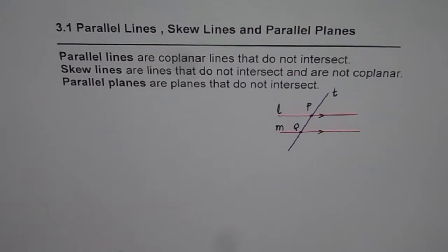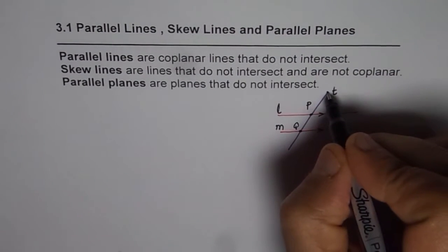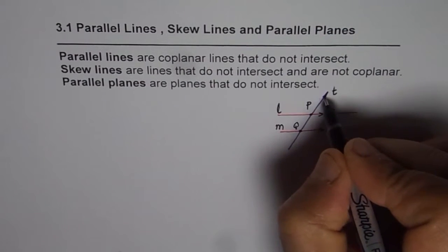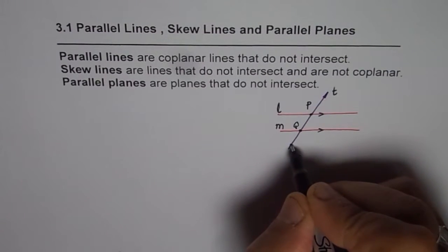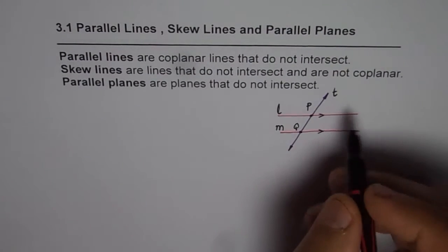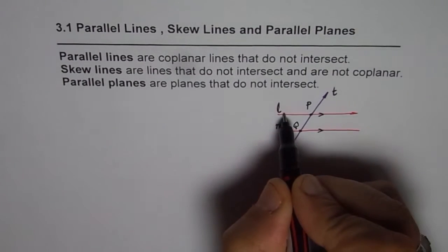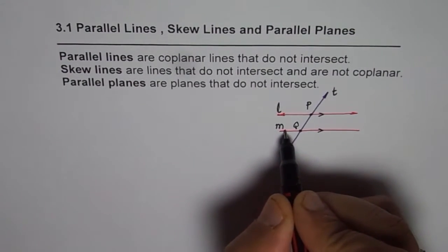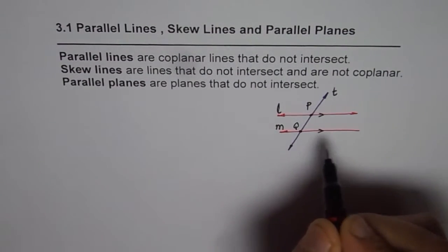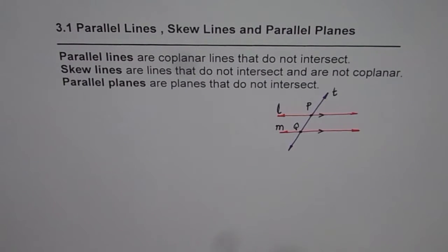Whenever drawing a line, the line extends both sides, so it is good to draw arrows at the end of the line indicating that they extend on both sides. I am going through the steps which are important to draw a neat diagram. Geometry is all about sketching, labeling, and communicating.